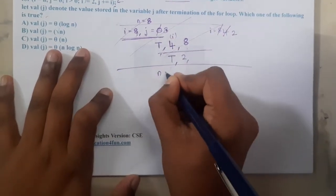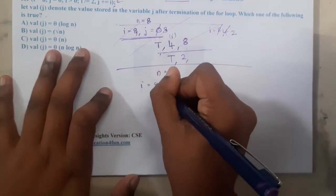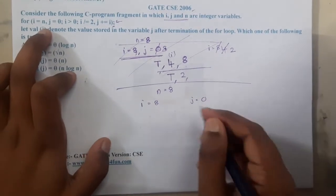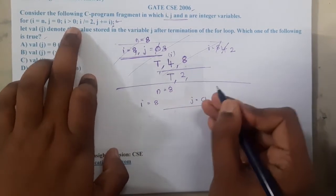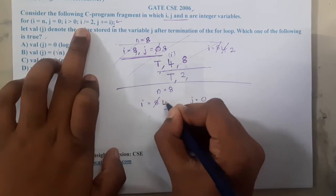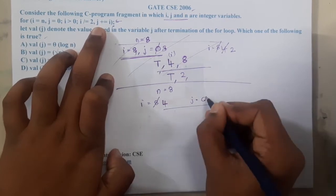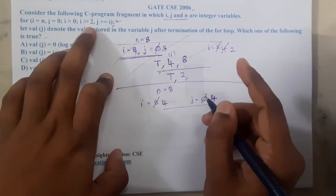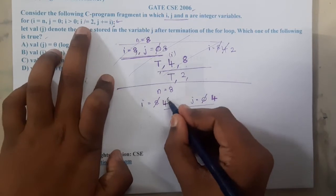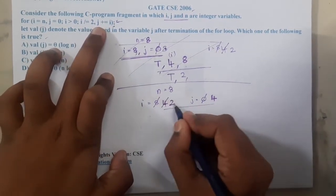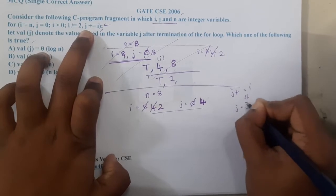So the initial value of n equals 8. The value of i equals 8, the value of j equals 0 — according to our question. Now checking whether i is greater than 0: yes, 8 is greater than 0, true, so you do i equals i divided by 2, which updates i to 4. Then j equals j plus i — note that j plus equals i means j equals j plus i, it's a shorthand notation. So j becomes 0 plus 4, which gives j equal to 4 after the first iteration.